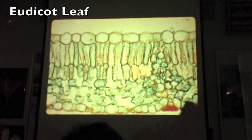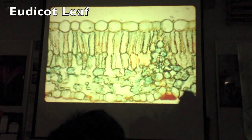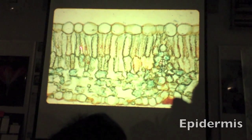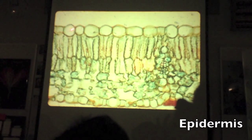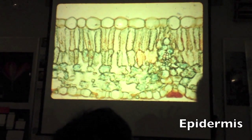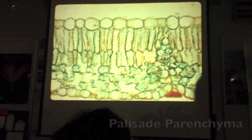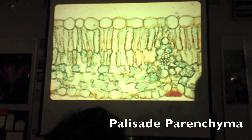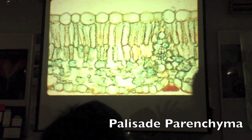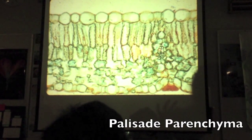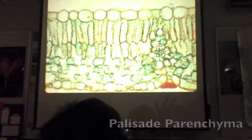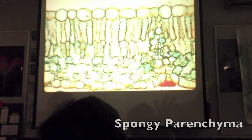What is this we're looking at now? Eudicot. So we've got — what's this on the top? Epidermis. And then this region right here? Palisade parenchyma, or just parenchyma. Spongy parenchyma down here.